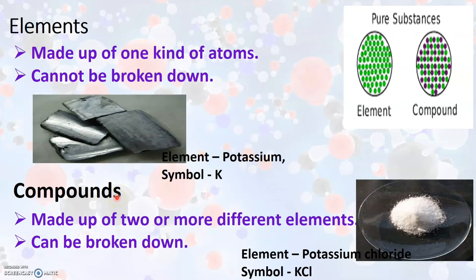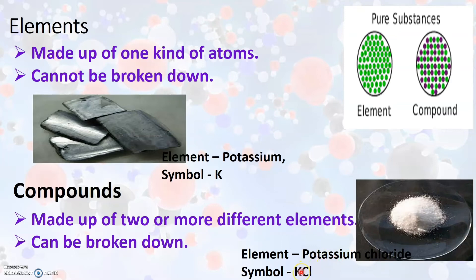Now let us see what compounds are. Compounds are made up of two or more different elements, and unlike elements, they can be broken down. Take the example of potassium chloride — this is a compound made up of two different elements, potassium and chlorine. If we try to break this compound, what we finally get are those two different elements, so it can be broken down into simpler substances called elements.